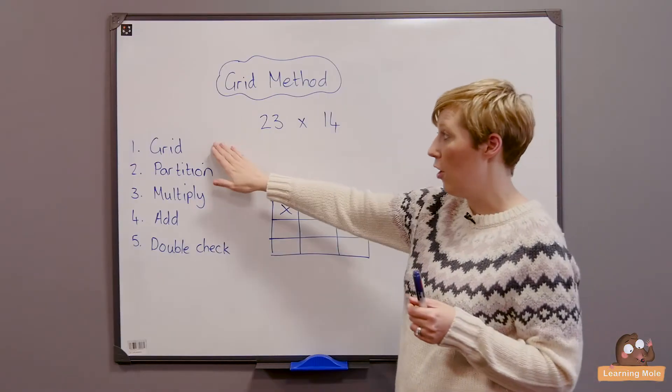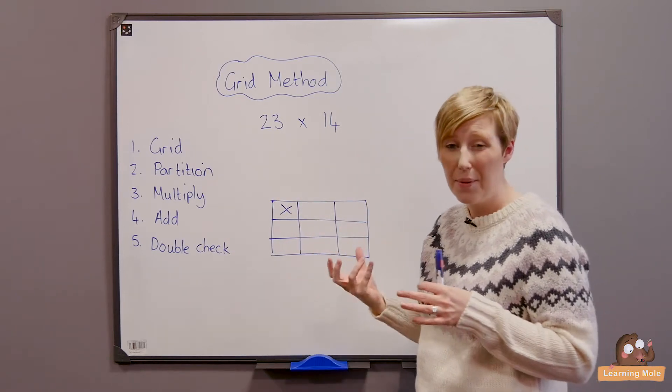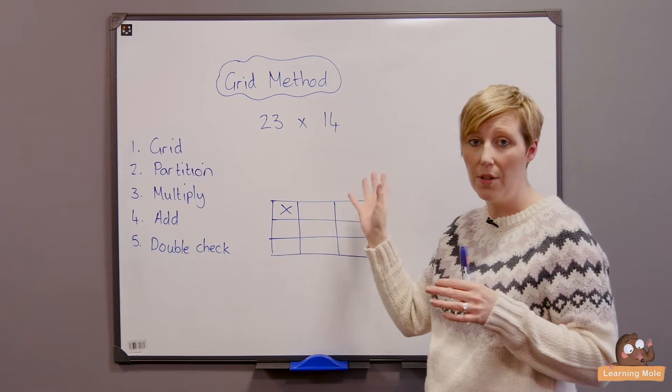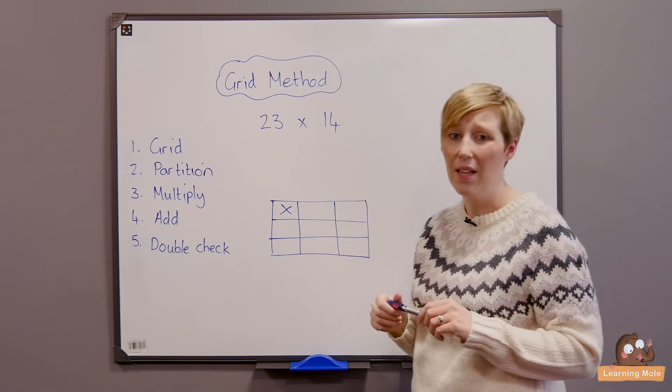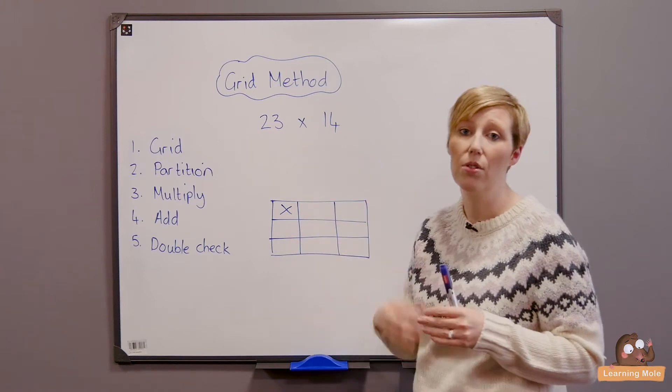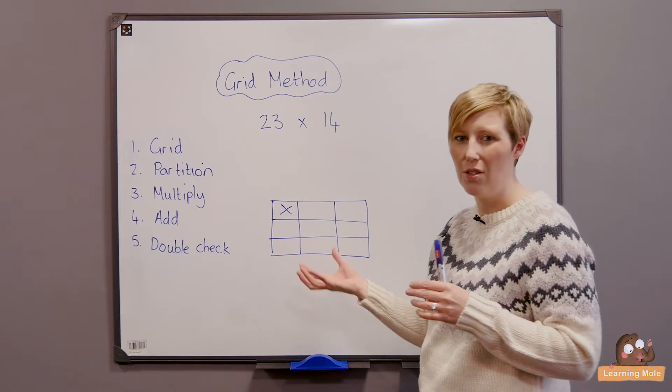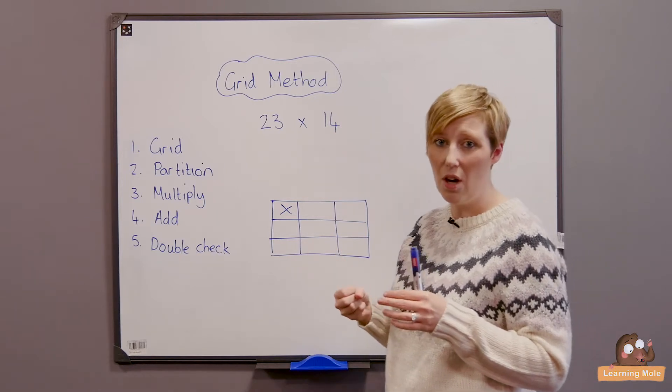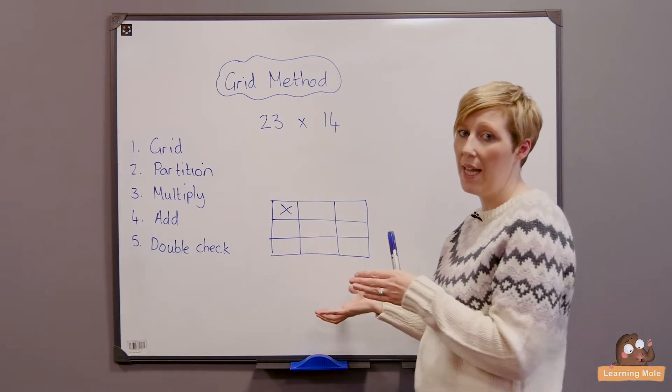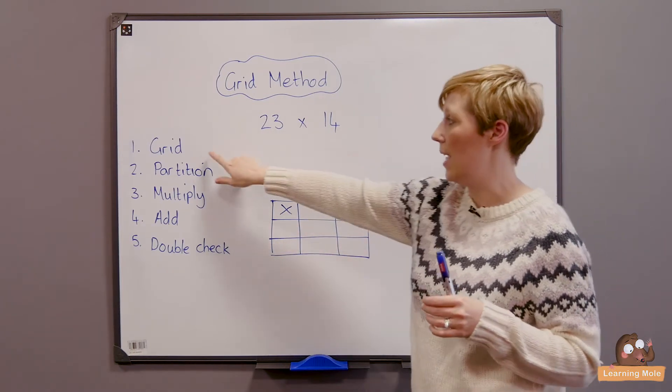Back to my five steps: I've got my grid drawn, and obviously your grid size will have to change depending on your numbers. I would actually always tell the children at the beginning of the lesson you need a grid with nine boxes or four boxes, so they know exactly what they're doing. Drawing the grid is not the key point you want to get out of this. I'm going to look at the calculation 23 times 14, so I've drawn my grid.